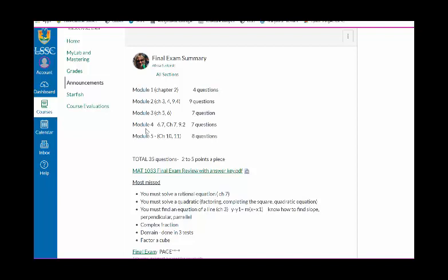Module 5 is chapter 10 and 11. So this is our radicals. And then our solving using completing the square, square root property, and quadratic formula. Please make sure you have the formats memorized.